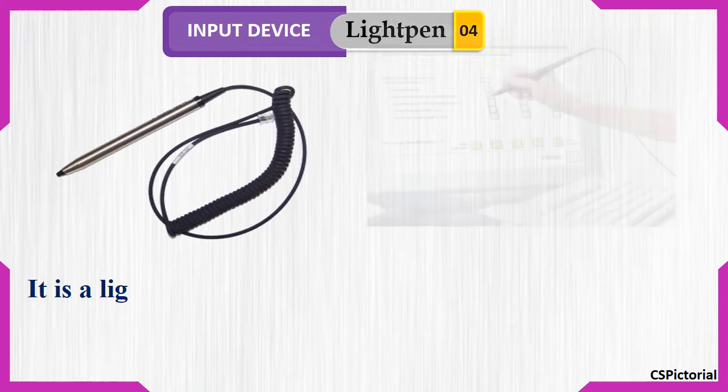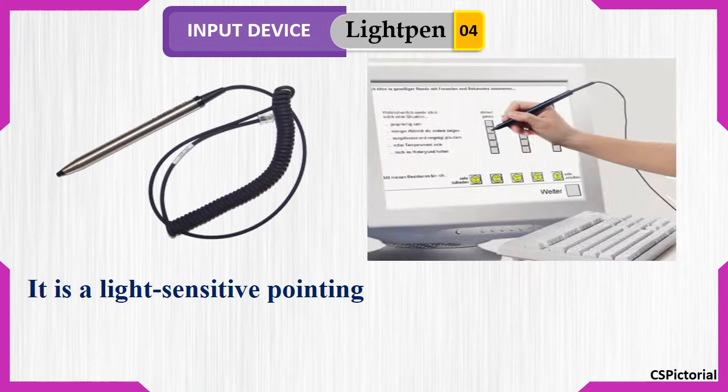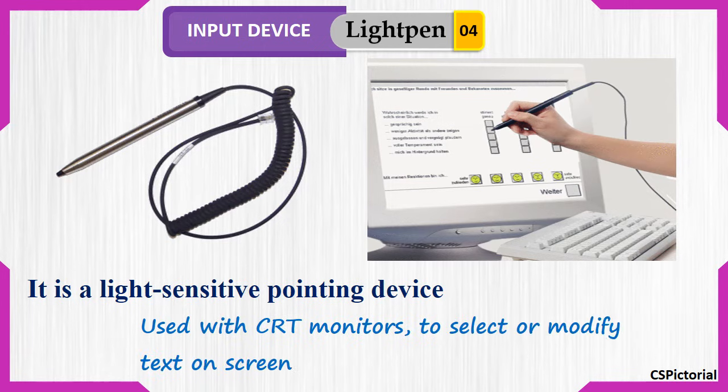The light pen is a light sensitive pointing device. It was used with the old CRT monitors to highlight the text on the screen.